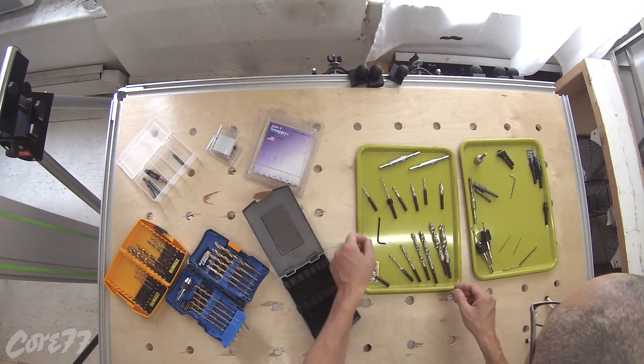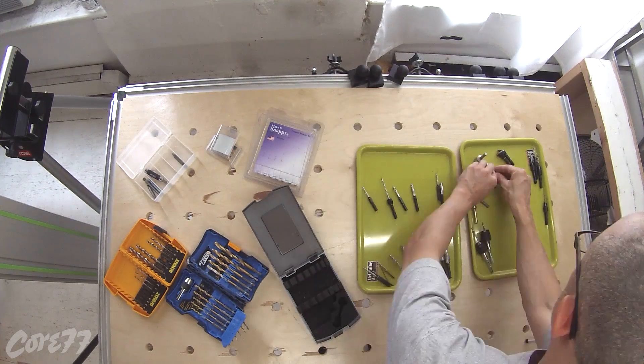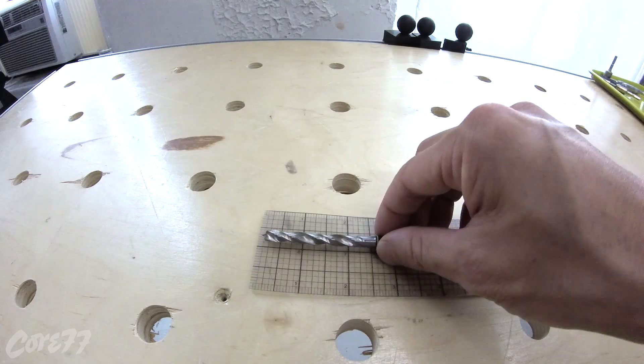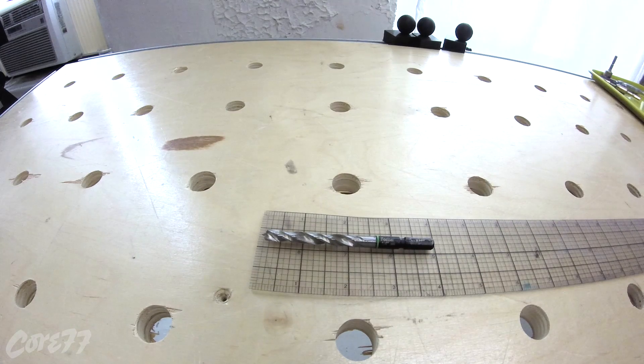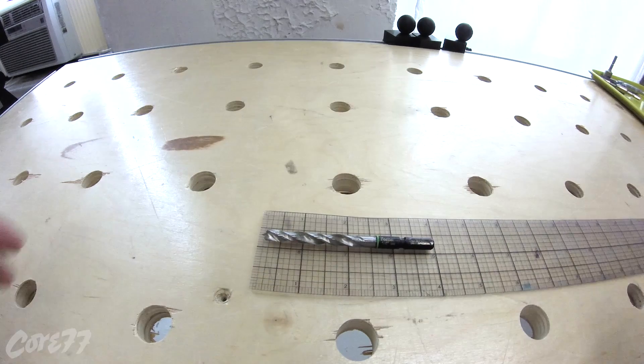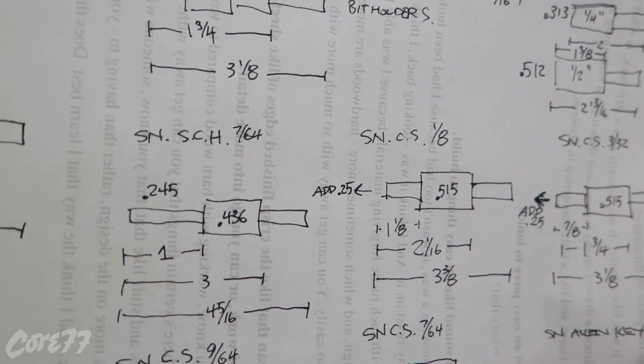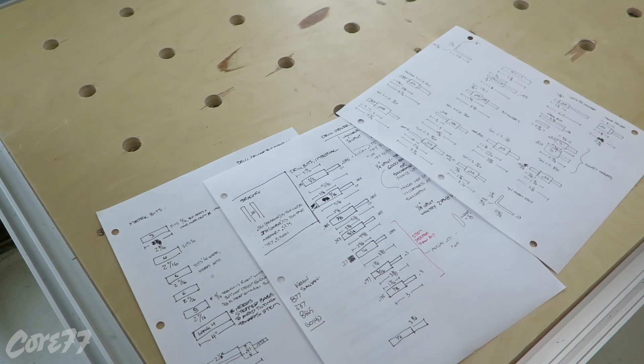Next I set aside all the bits that I figured I would most frequently use and I put them on this tray and divided them into categories. To quickly measure them, I laid them on a fabric ruler to get their rough lengthwise dimensions. The bits and the shanks are all standard widths, but I had to caliper the irregular parts to get a dimension. I recorded all of those dimensions onto these worksheets.